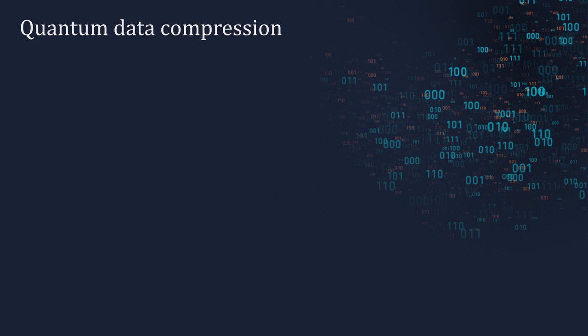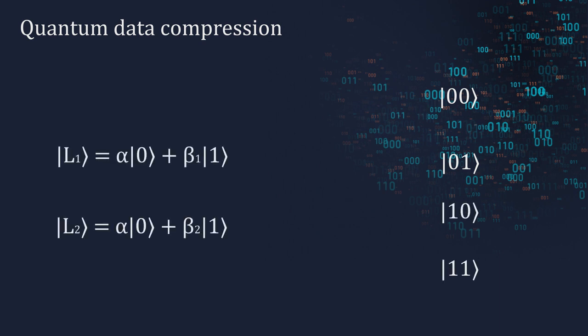The basis states of a two-qubit ensemble are |00⟩, |01⟩, |10⟩, |11⟩. Let us consider a two-letter system with alpha the same for the two letters, and both alpha and beta real numbers. Then the two-letter state will be.